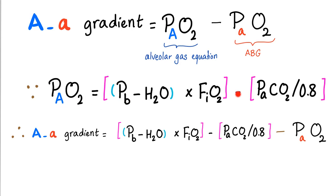P(A)O2 is calculated; P(a)O2 is measured. The AA gradient equals P(A)O2 minus P(a)O2. P(A)O2 is derived from the alveolar gas equation: take atmospheric pressure, subtract water vapor pressure (since your lung is moist, not dry), multiply by the fraction of oxygen, then subtract CO2 — because oxygen and CO2 oppose each other. You get P(A)O2, measure P(a)O2 from the ABG, and subtract to get the gradient. Normal range: 5 to 15 mmHg.